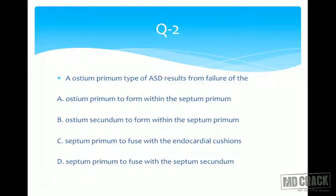Let's look at the next one — a one-line question. Ostium primum type of ASD results from failure of? It's a one-liner but a tough one for those who don't understand the concept of atrial septal defect. The same question can also be asked as a clinical question with a detailed history, but the final line would be the same.